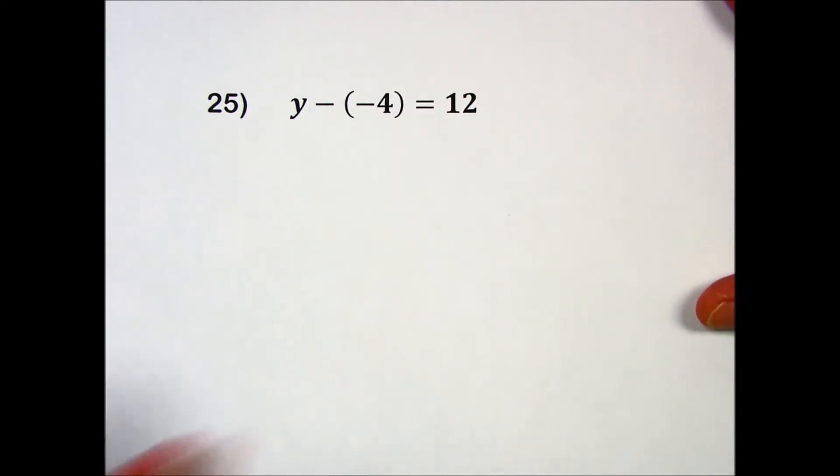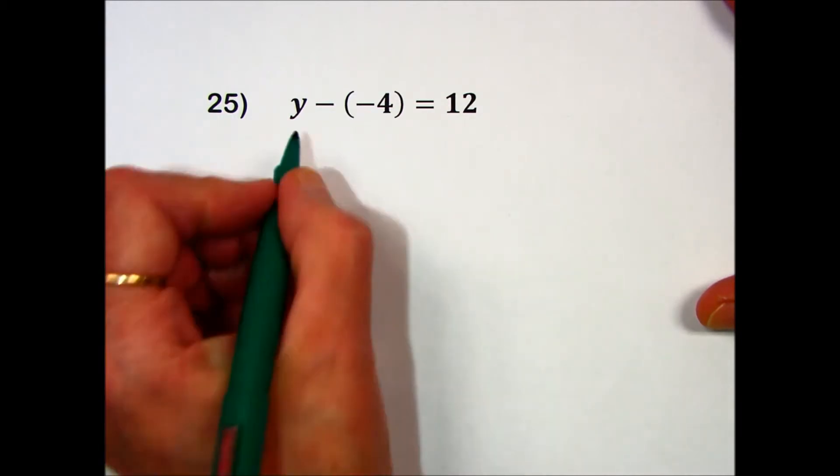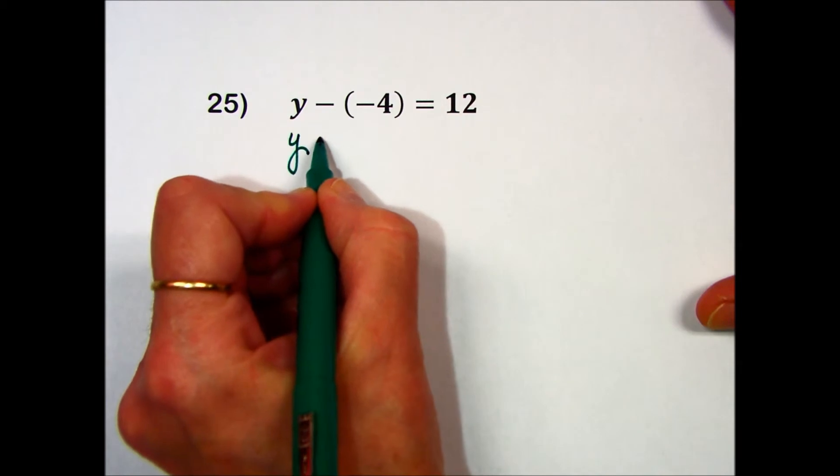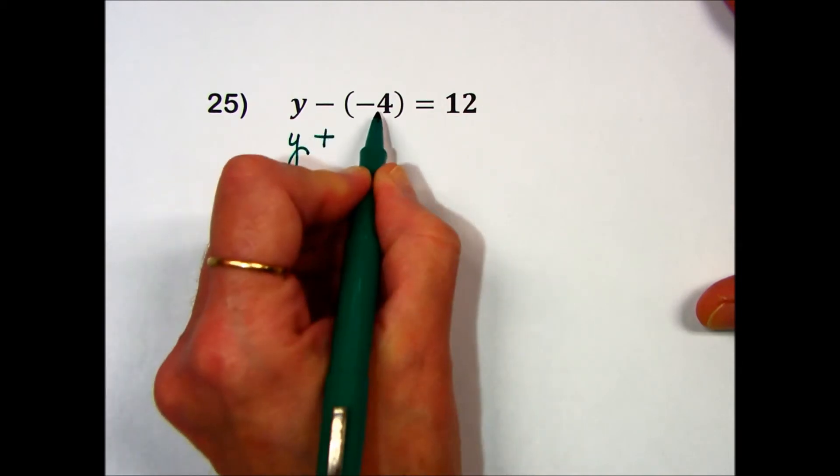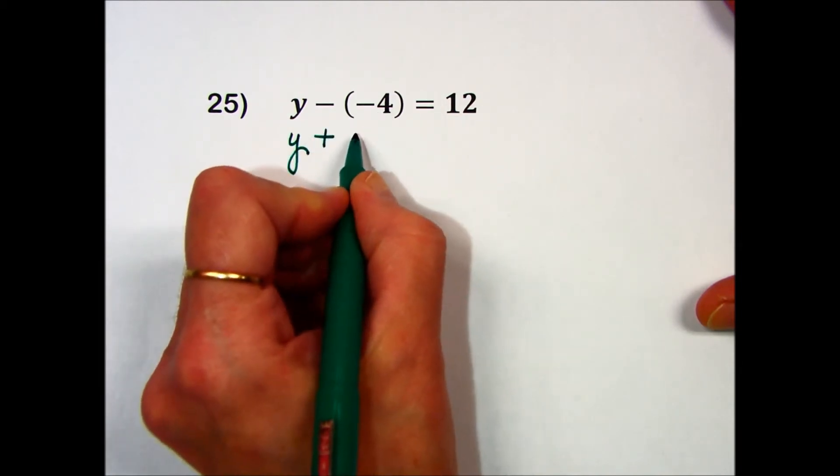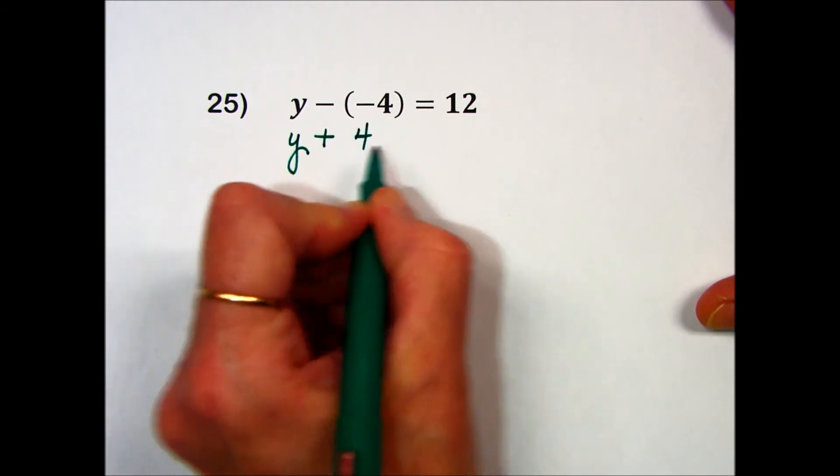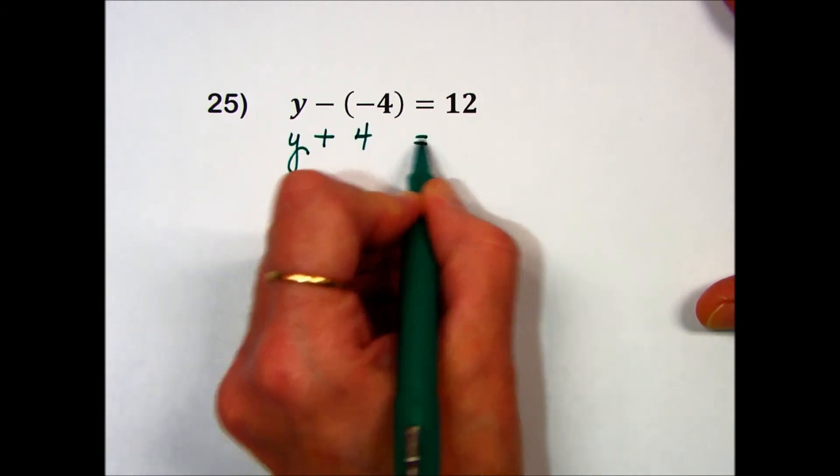Problem number 25. The variable is being subtracted by the value of negative 4. Using our rule of subtraction, I'm going to change a minus sign into a plus, the opposite of what we have. So instead of a negative 4, it becomes a positive 4, is equal to 12.